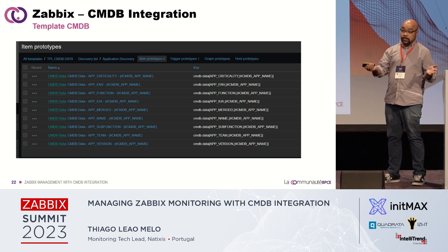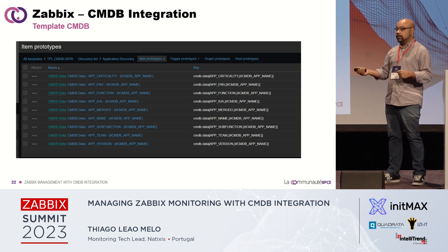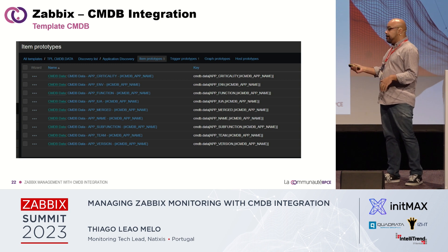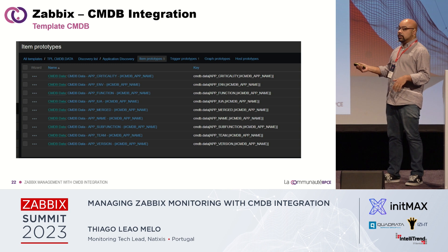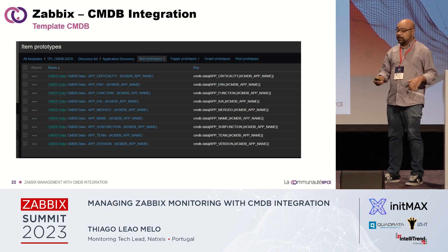The template in CMDB has several items and is still in development — it's always evolving because it's a dynamic integration. Every day we identify new features to implement. We retrieve everything from CMDB, then use many dependent items to separate the data into individual items. Low-Level Discovery is responsible for discovering applications installed on the host based on CMDB information. The CMDB API delivers information in JSON format, making it straightforward to integrate with LLD.